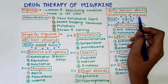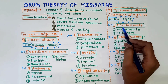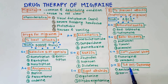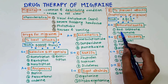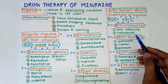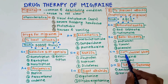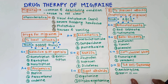Drugs to prevent attacks are also called prophylaxis of migraine. To remember these, the trick is 'ABCD': A for Anticonvulsants, B for Beta blockers, C for Calcium channel blockers, and D for tricyclic antidepressants. Anticonvulsants include sodium valproate and topiramate, and also gabapentin. Beta blockers include propranolol, timolol, and atenolol. Calcium channel blockers include flunarizine and verapamil. TCA antidepressants include amitriptyline and nortriptyline.